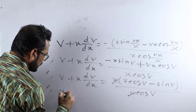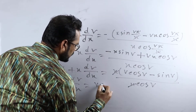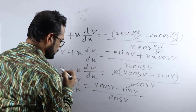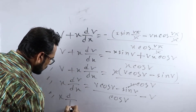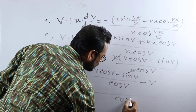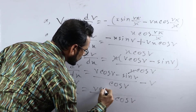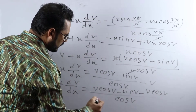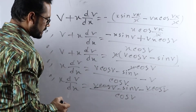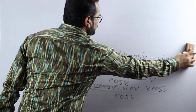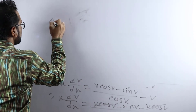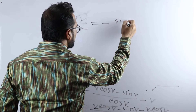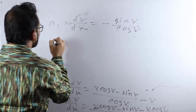Rearranging, x dv/dx equals v cos(v) minus sin(v) divided by cos(v) minus v. Taking cos(v) as the common denominator (LCM), we get x dv/dx equals v cos(v) minus sin(v) minus v cos(v), all divided by cos(v). The v cos(v) terms cancel, giving x dv/dx equals minus sin(v) divided by cos(v).